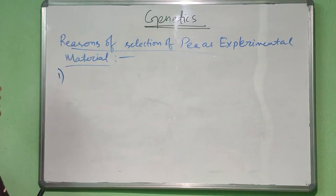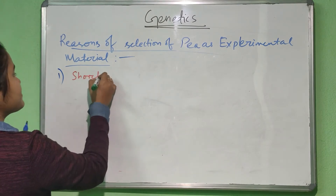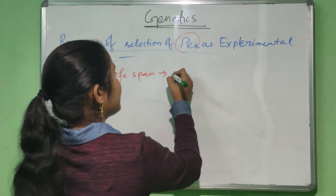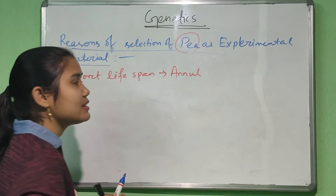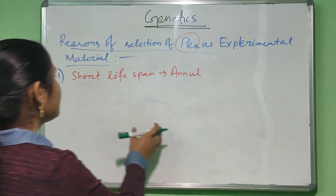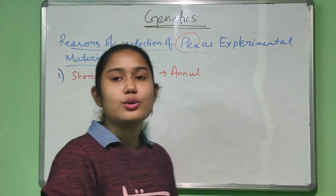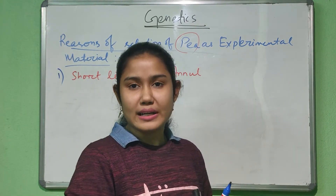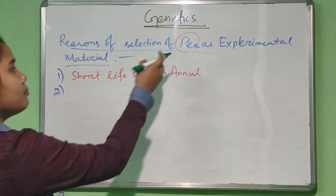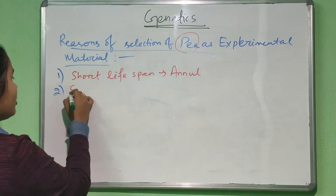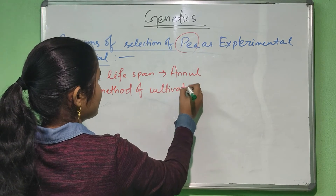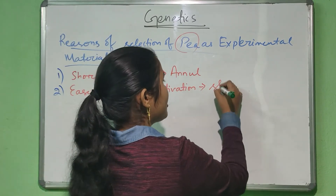The first reason is the pea plant has a short lifespan. This pea plant is annual — it has a life cycle of one year. Due to its short lifespan, he was able to conduct experiments very rapidly. The second point is this pea plant is very easy to cultivate — easy method of cultivation. This pea plant has a very short generation time.